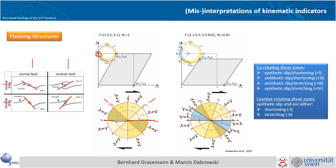So going through quickly: this would be the orientation of a slip surface which is co-rotating, has a synthetic shear, but is instantaneously shortening. This would be a slip surface which is antithetically shearing, co-rotating, but still shortening. This is again a slip surface which is antithetically shearing, co-rotating, but instantaneously stretching. And this orientation would be a slip surface which is synthetically shearing, co-rotating, and stretching.